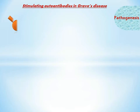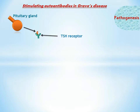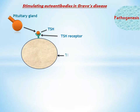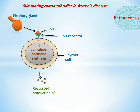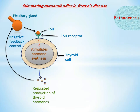To understand Graves disease, let's recap normal gland functioning. The pituitary gland, under the influence of TRH produced by the hypothalamus, releases TSH. TSH binds with its receptor on the thyroid cell, stimulating it to produce hormones. When thyroid hormones reach their plasma level, a negative feedback control inhibits further TSH production, thus regulating thyroid hormone levels.